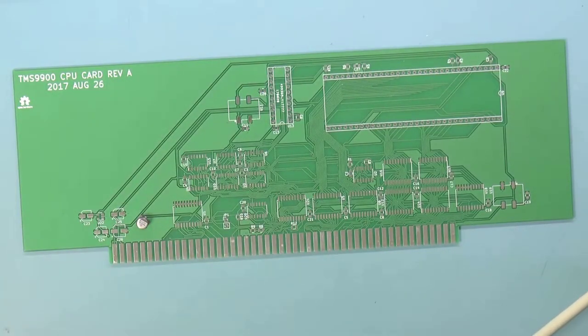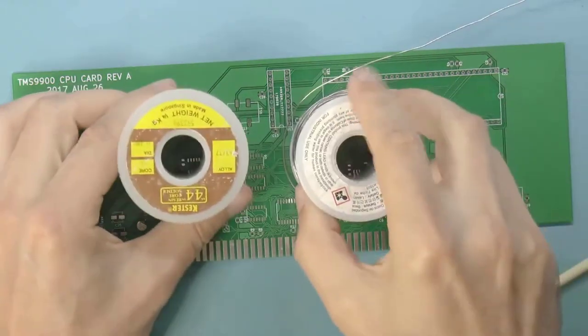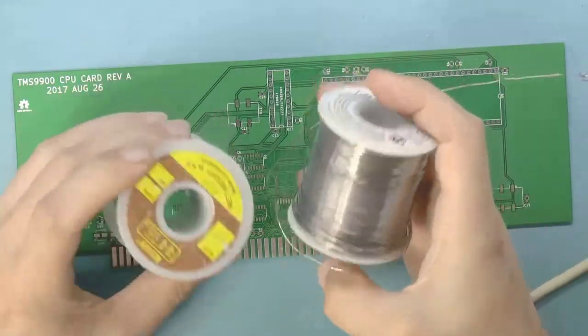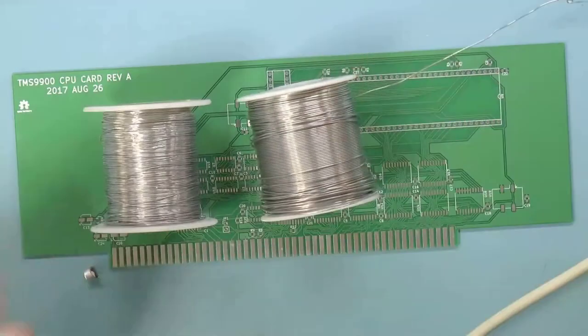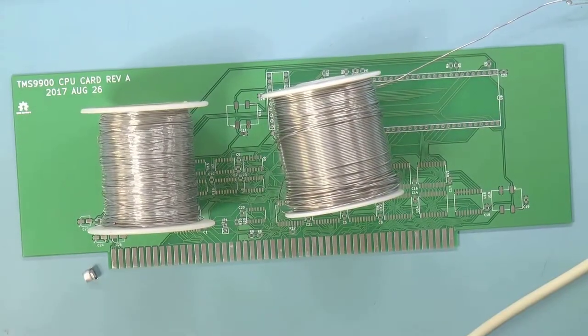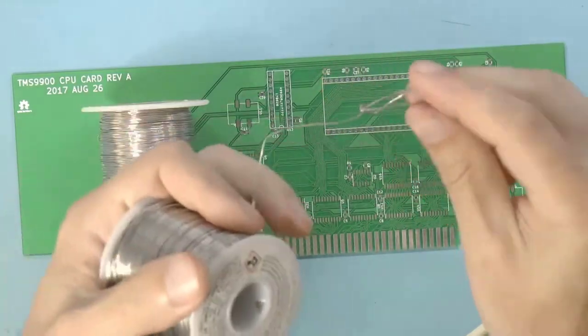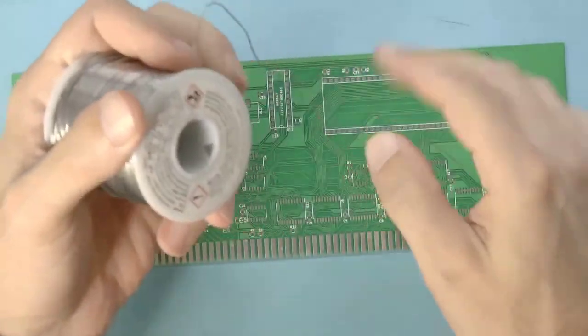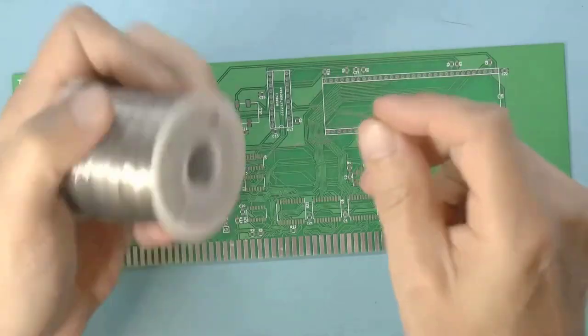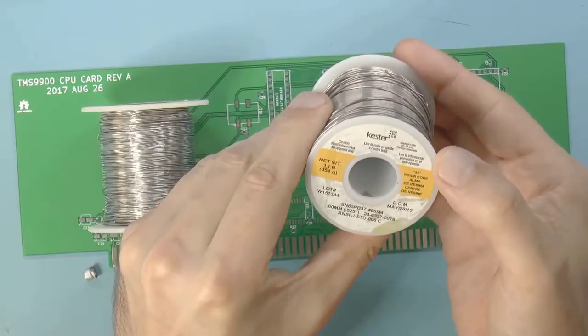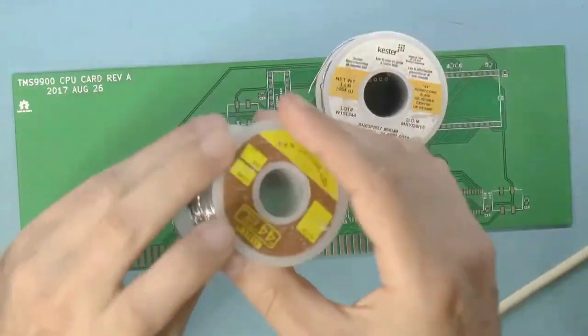And the other thing that I have is solder. Now I have two different kinds of solder, these are both leaded solder. I suppose I could use non-leaded solder but I don't see why because I'm a hobbyist, I'm not an industry, so my exposure to lead is pretty much zero. This is a rosin core so it's got the flux on it.